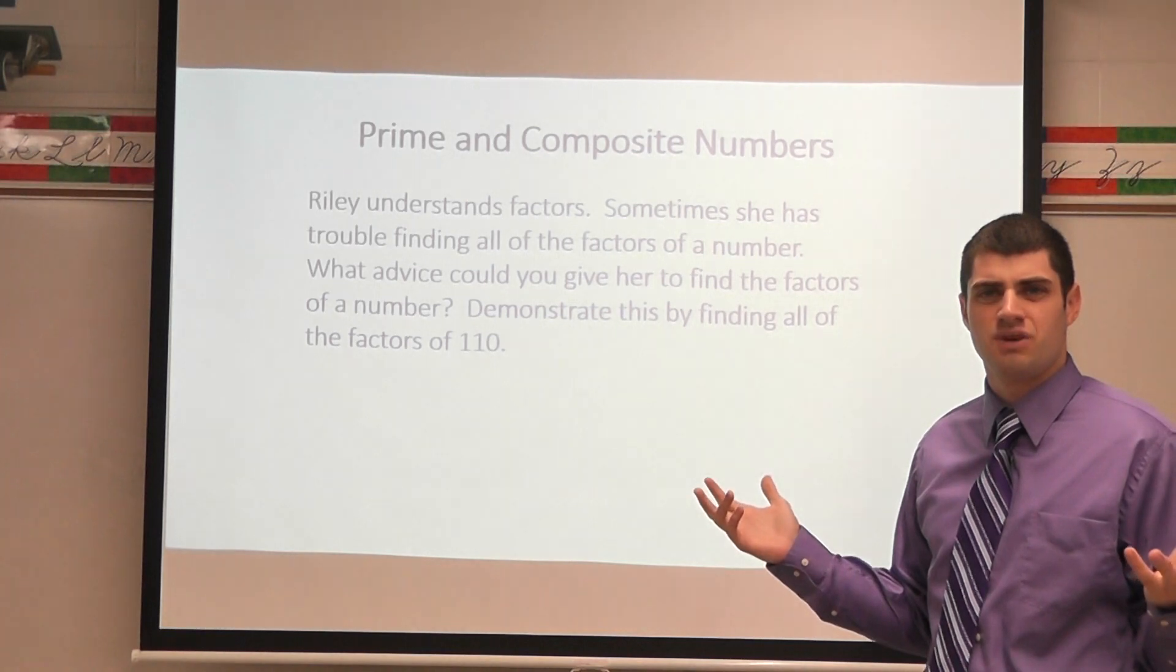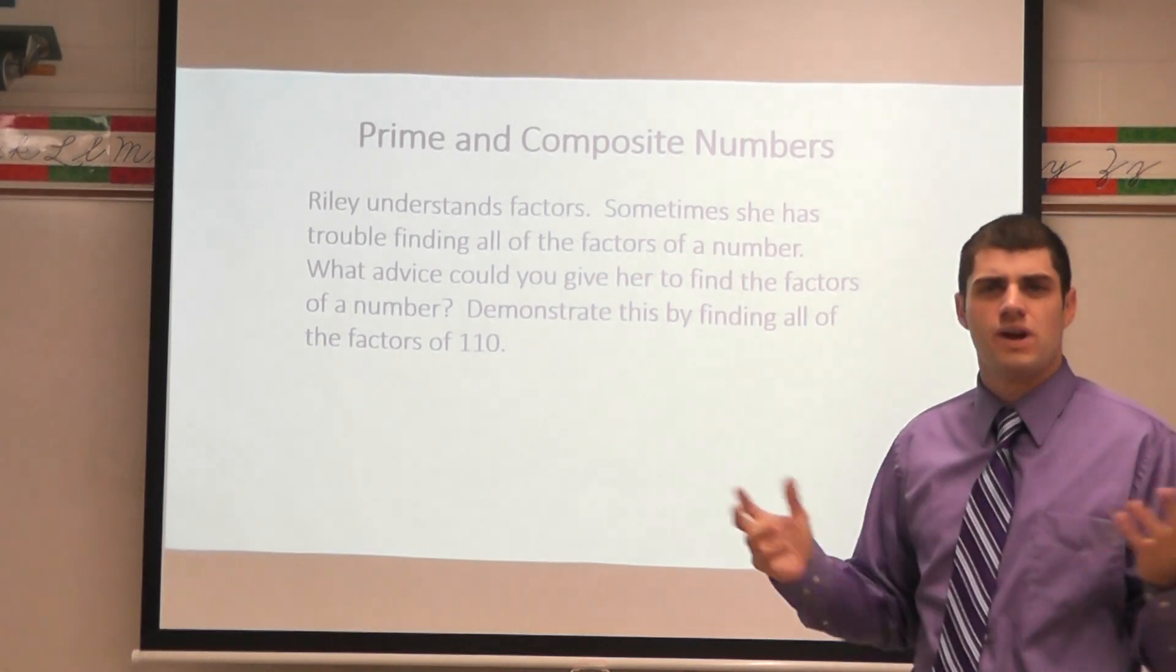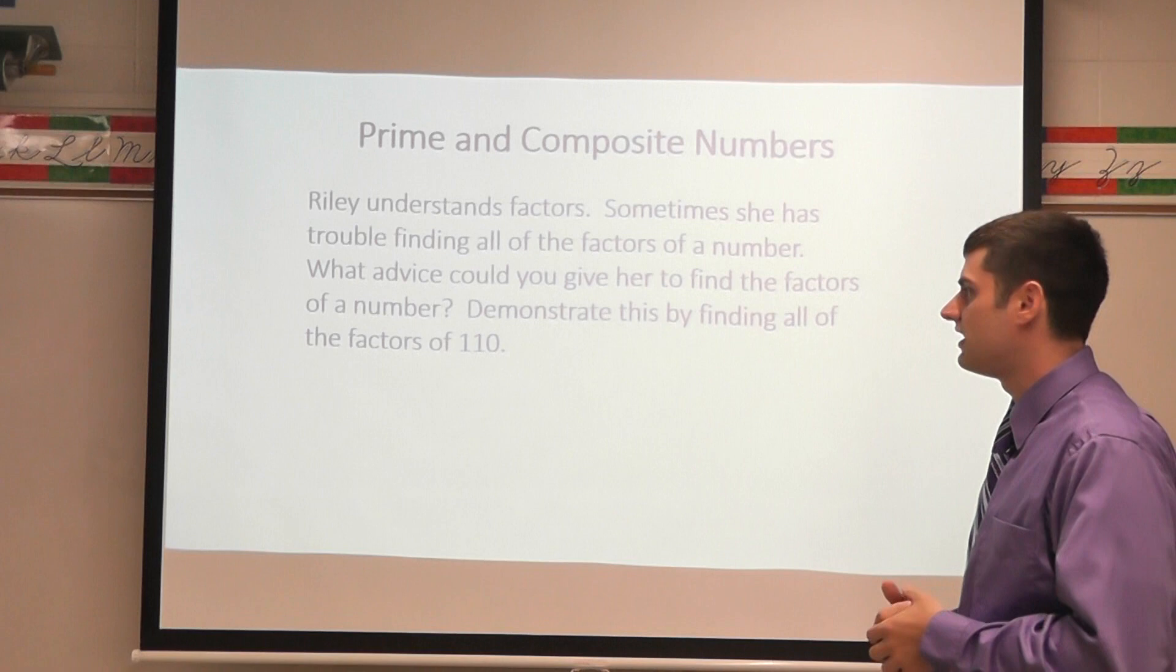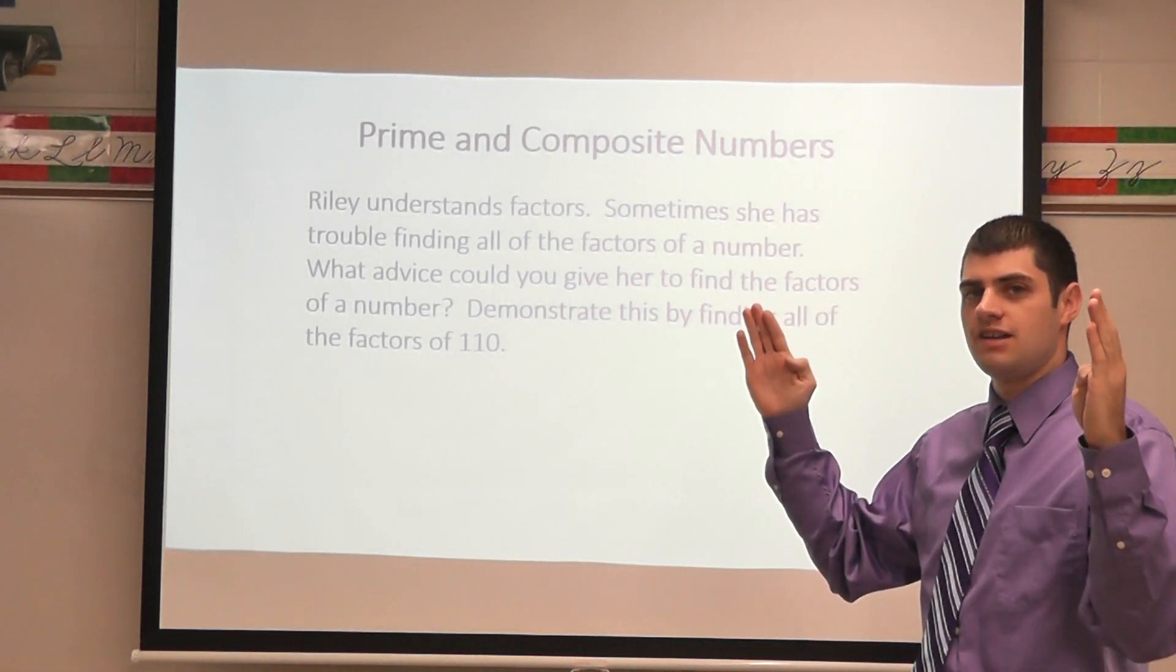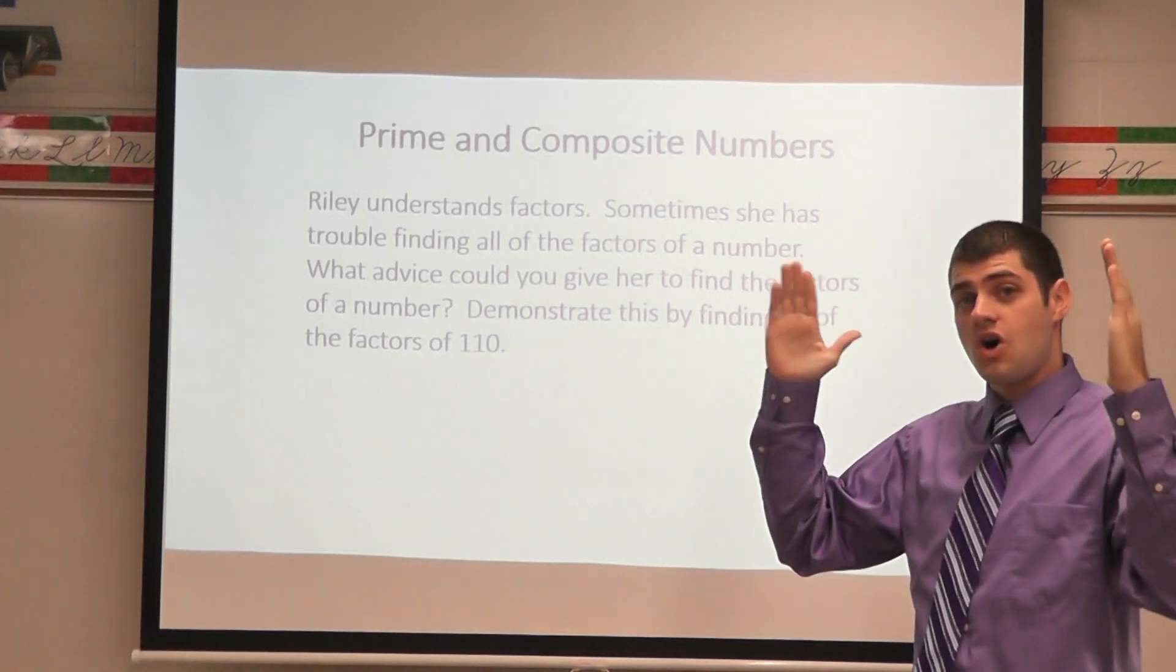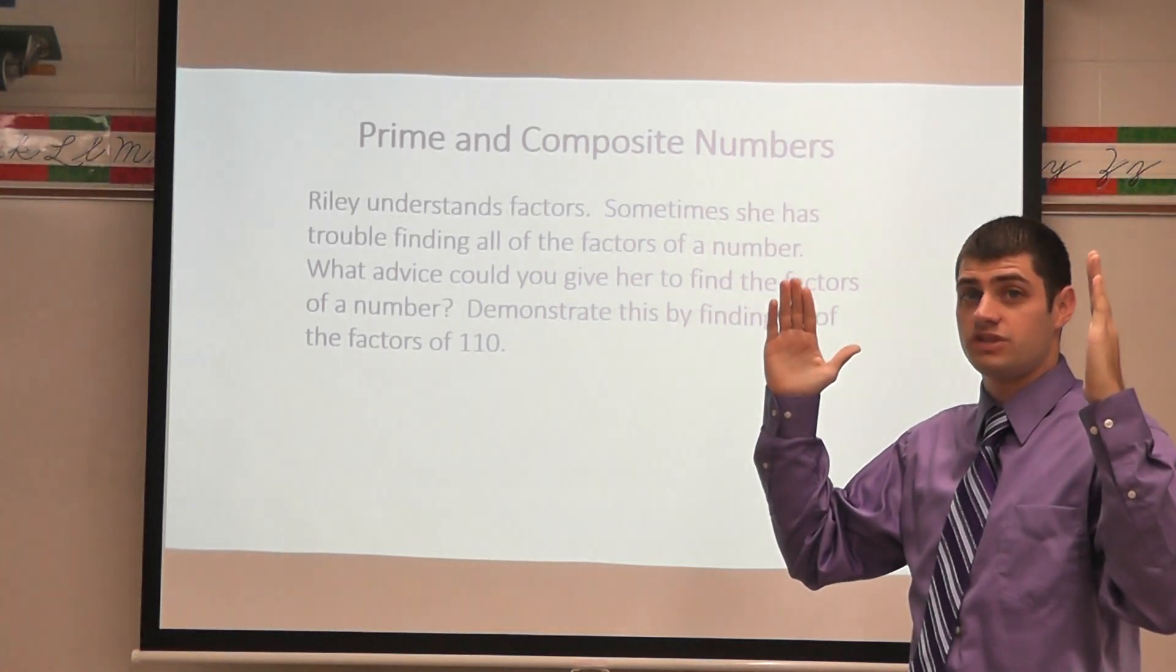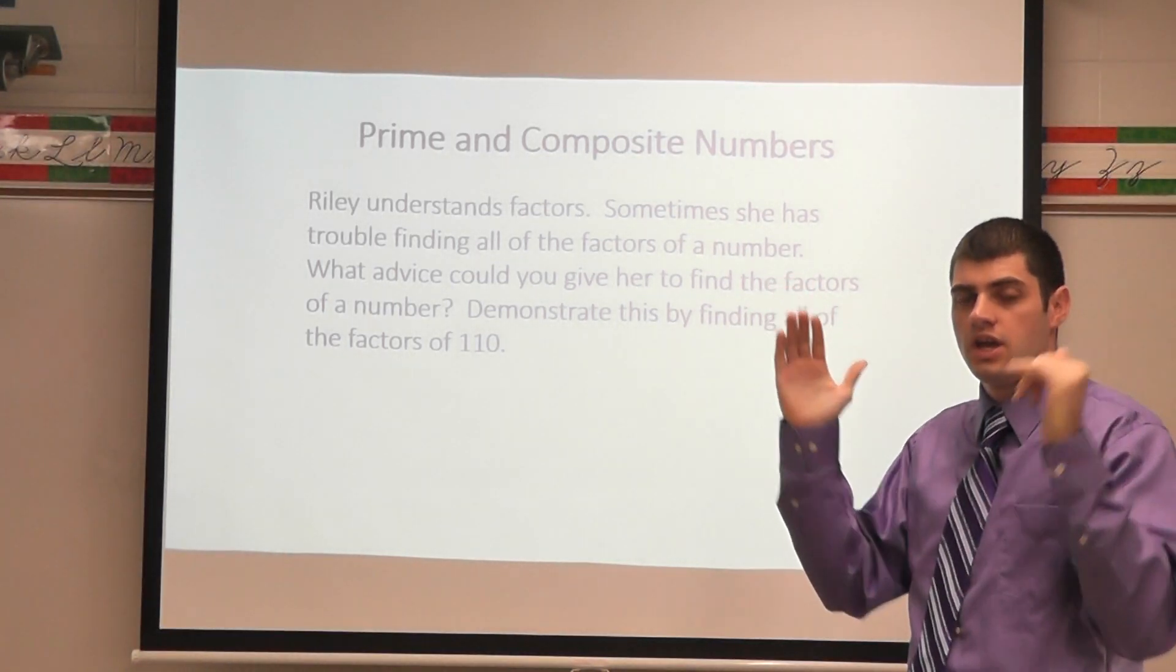Where do I start then when I'm trying to find these factors? Do I just randomly guess numbers? Where can I begin to find this? Well we know that one times 110 gives us 110. So all the factor pairs that I have are going to be between one and 110.